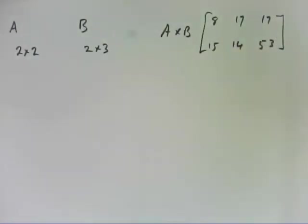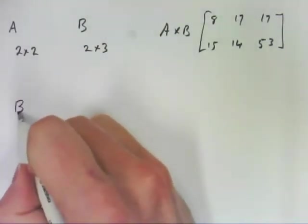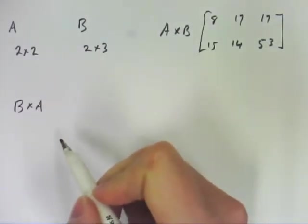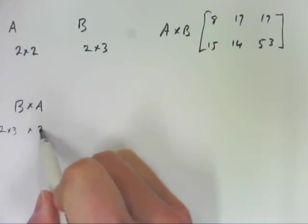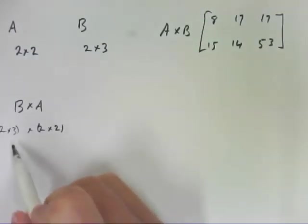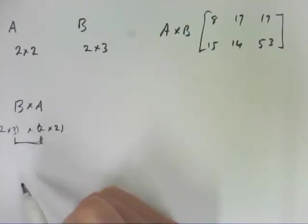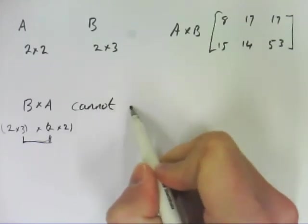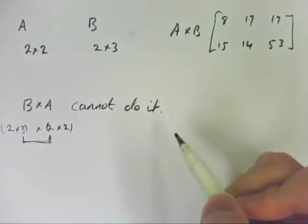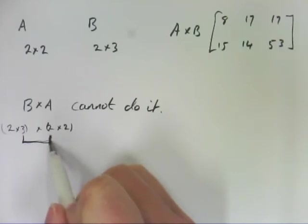I'm going to work out a calculation here of B times A. So that's a 2 by 3 by 2 by 2. So these two numbers, the rows in the first one, are not equal to the columns in the second one. Sorry, wrong way around. The columns in the first one are not equal to the rows in the second one. So therefore, we cannot do it. Because these two numbers are not the same.